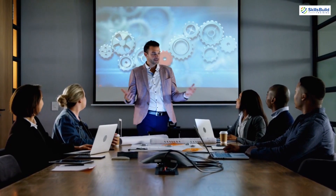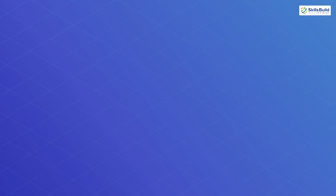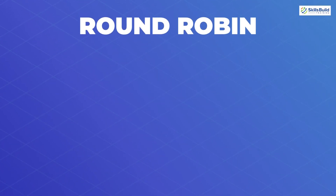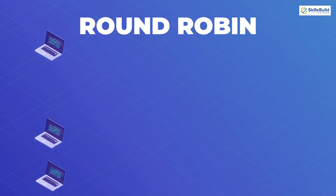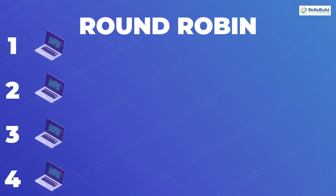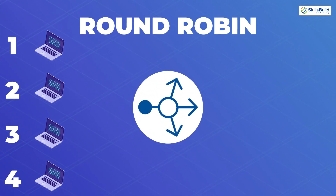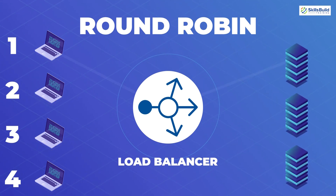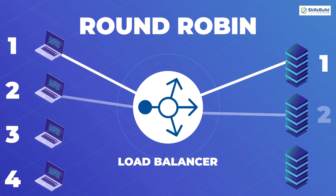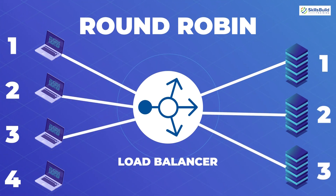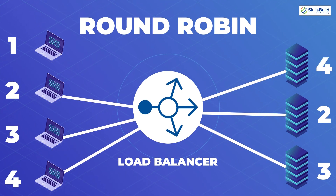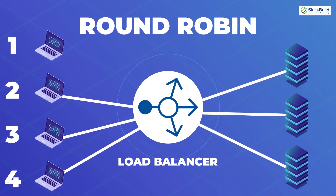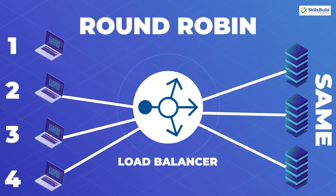There are several load balancing techniques. Round robin is one of the simplest and most used — client requests are distributed to application servers in rotation. For example, with three application servers, the first request goes to server one, second to server two, third to server three, and the fourth request goes back to server one. Round robin assumes all application servers have the same availability, computing power, and load handling capacity.